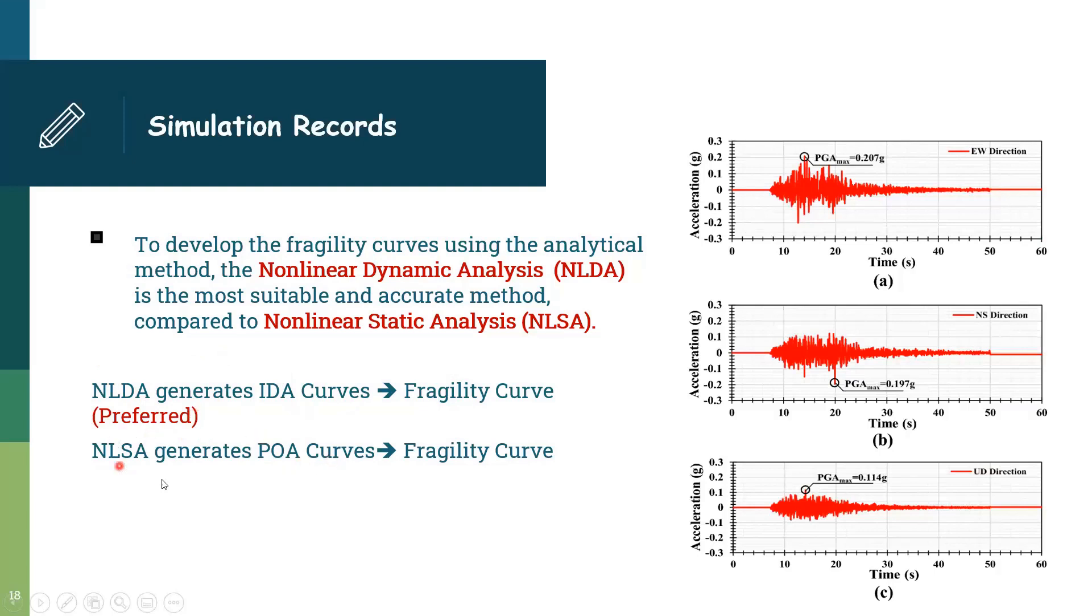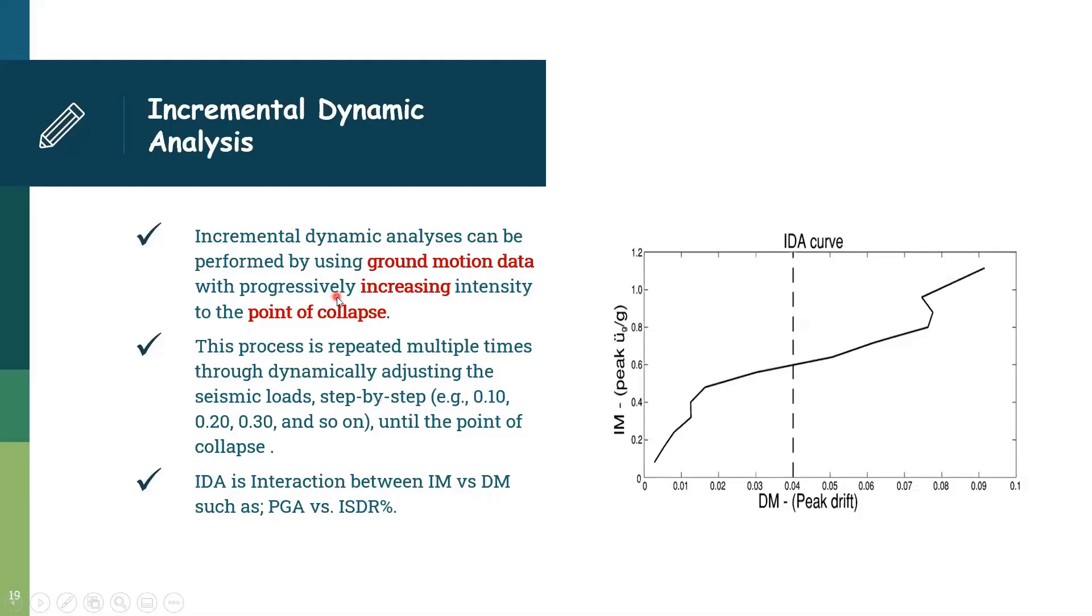And there's also nonlinear static analysis that generates pushover analysis curve. We prefer to go to the incremental dynamic analysis because it is based on ground motion, real ground motion. It is based on multi-degree of freedom, multi-displacement. However, the pushover analysis or static analysis is based on single degree of freedom, single displacement. So the incremental analysis depends on two significant parameters: intensity measure and the damage measure. The intensity measure is PGA. The damage measure is selected as inter-story drift ratio. So the incremental analysis can be performed by using ground motion data by incrementally increasing the intensity to the point of collapse and stop.